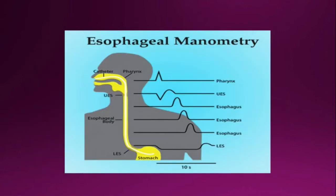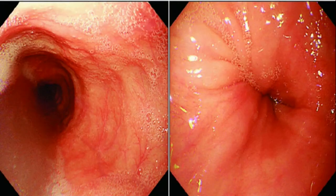Also note absence of fundal gas. Esophageal manometry is the gold standard — an esophageal motility study is done. Endoscopy of the upper GI tract is also performed; you can see the picture of the endoscopy here.